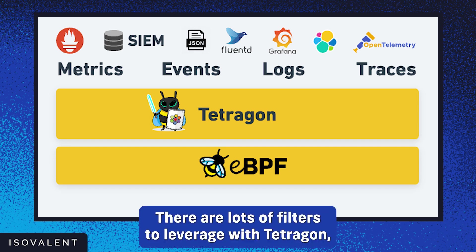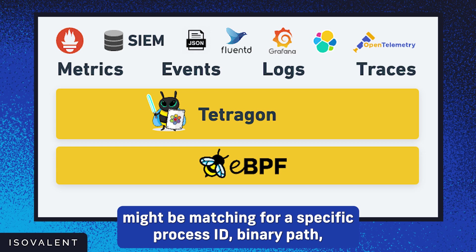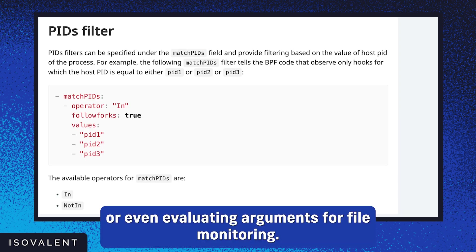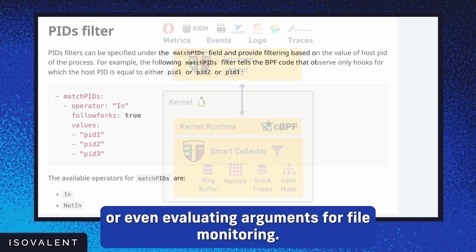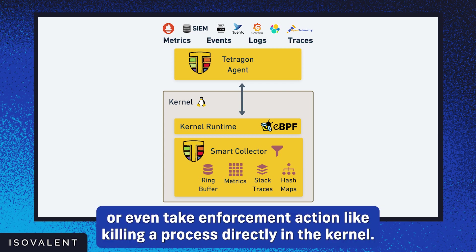There are lots of filters to leverage with Tetragon, but an example of these selectors might be matching for a specific process ID, binary path, or even evaluating arguments for file monitoring. Once filtered, Tetragon can export events to a preferred logging SIEM or cloud provider, or even take enforcement action like killing a process directly in the kernel.